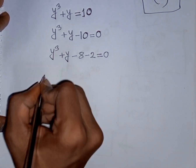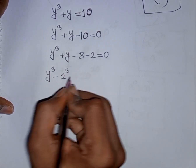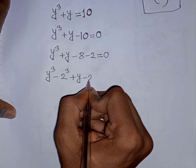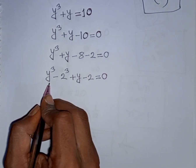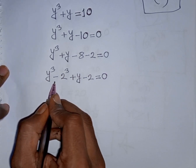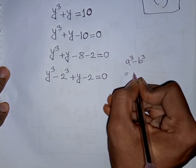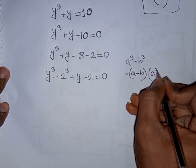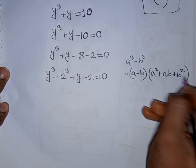Now we can write y cubed minus 8 as y cubed minus 2 cubed, then plus y minus 2 equals 0. Here we apply the formula for a cubed minus b cubed, where a is y and b is 2. According to this formula, a cubed minus b cubed equals a minus b times a squared plus ab plus b squared.